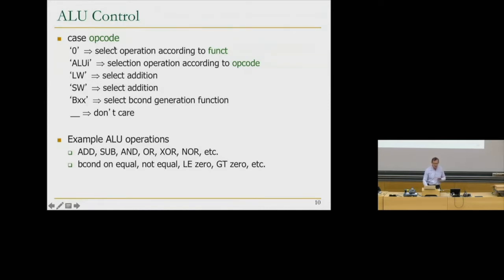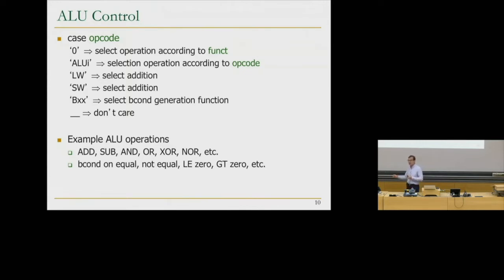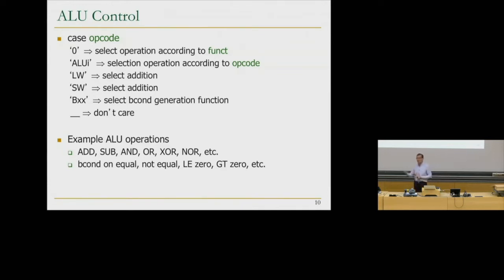For ALU control, you decide what the ALU should do based on the opcode. If the opcode is zero, you select the operation based on the funct bits — these are R-type operations. If the opcode is an immediate ALU opcode, you select the operation according to the opcode. If it's load word or store word, the ALU does addition to calculate the address. If it's branch, you use the branch condition generation function — for branch equal, you do subtraction. Otherwise you have a don't care, which you can use to minimize the control logic.